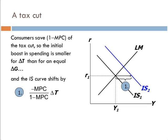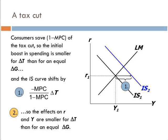Consumers, and so the IS curve shifts by a smaller amount, shifts by this amount. Remember where that comes from? That's the tax multiplier. We did this in chapter 10.